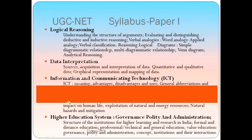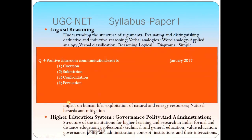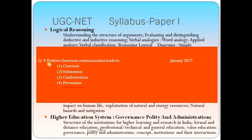For example, here is a question recently asked in the January 2017 UGC NET Exam: 'Positive classroom communication leads to — (1) Coercion, (2) Submission, (3) Confrontation, (4) Persuasion.' Since persuasion means encouragement or motivation, which leads to positive classroom communication, the correct option is 4.